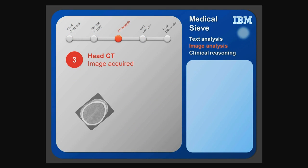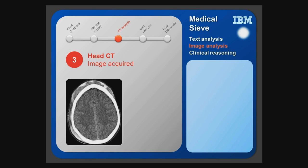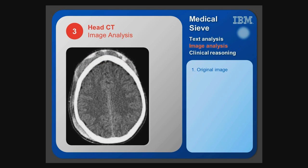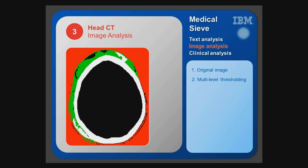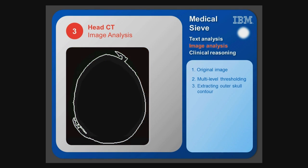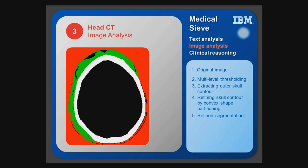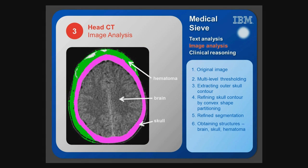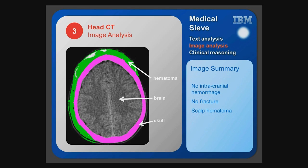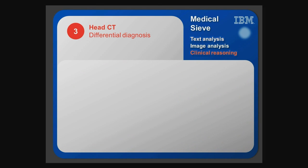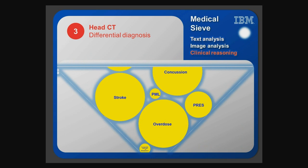A head CT is ordered to check for head trauma. Automatic analysis performs multi-level thresholding, extracts the outer skull contour, refines it by convex shape partitioning, and obtains structures: brain, skull, and hematoma. Results show no intracranial hemorrhage, skull intact with no fracture, and a scalp hematoma. Disease probabilities are updated and the main choices narrow down to stroke, overdose, concussion, and PRES — posterior reversible encephalopathy syndrome.